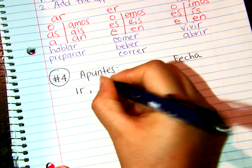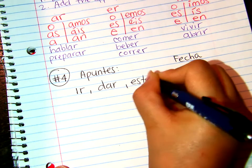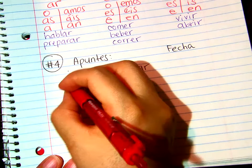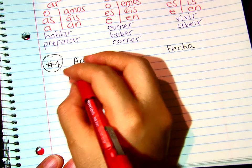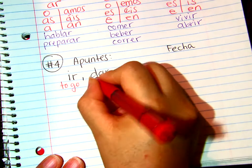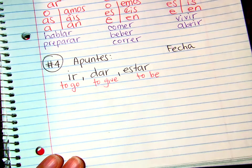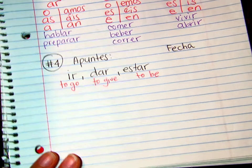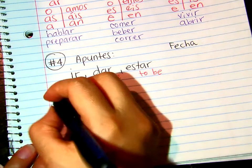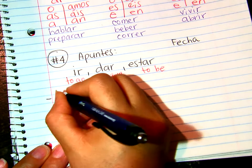Ir, dar, estar. So, the verb ir means to go. Dar means to give. Estar means to be. A few things about these three: they are irregular.